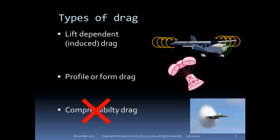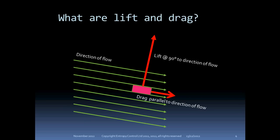We will be ignoring compressibility drag as the kind of aircraft we generally fly operate at low Mach numbers. The only part of the aircraft that gets close to sonic speeds are the propeller tips. Just to remind you again: lift is a force at right angles to the airflow, and drag is parallel to the airflow. Note that the lift is not always vertical nor is the drag always horizontal.